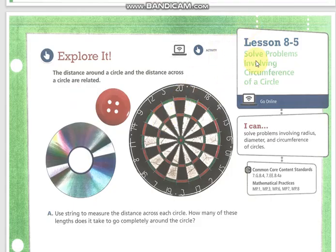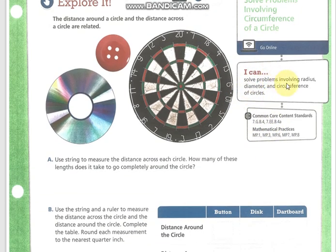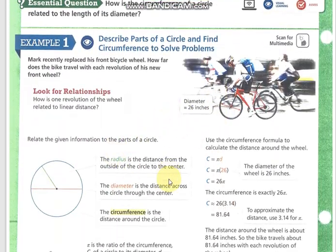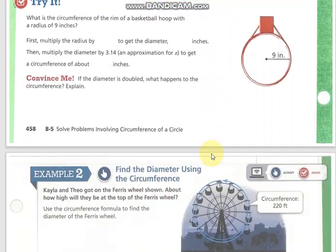After that, lesson 5 is talking about circumference. Again, I need to either find the circumference or find the radius or the diameter of the circle - different types of questions with the same idea.